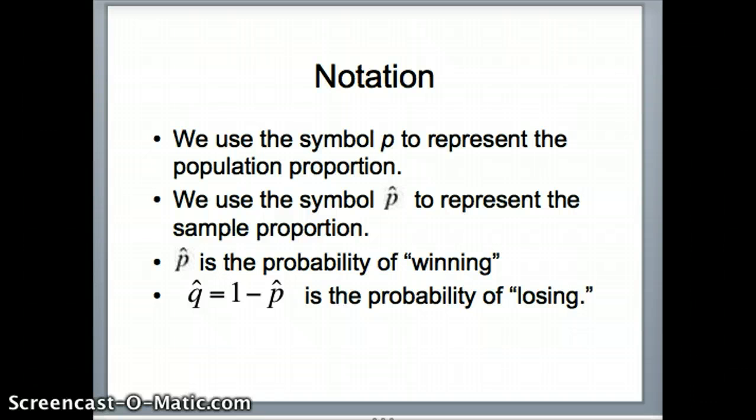We use the symbol p to represent the population proportion. Population means everybody in the group to be studied. It is usually impractical to get everybody in the entire population. What we do instead is take a sample, a random sample of items in the population, and analyze that data. We use the symbol p-hat to represent that sample proportion. P-hat is the probability of winning, so that's the total number of winners divided by the entire total. Q-hat is 1 minus the probability of winning. Q-hat is 1 minus p-hat. That is our probability of losing.